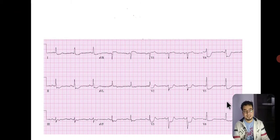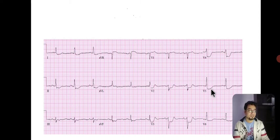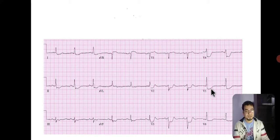ST depression can also be seen as a side effect of digoxin overdose, and tachycardia above 150–180 per minute can also lead to ST segment depression. ST segment depression is usually caused by subendocardial ischemia, and sometimes it may be due to unstable angina.